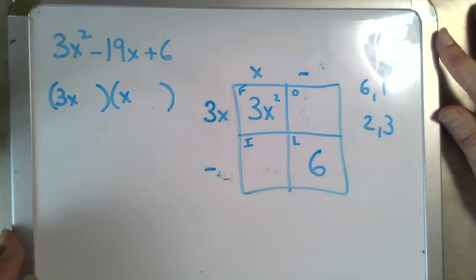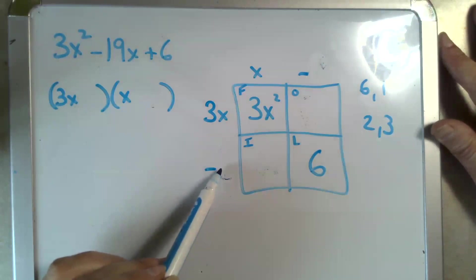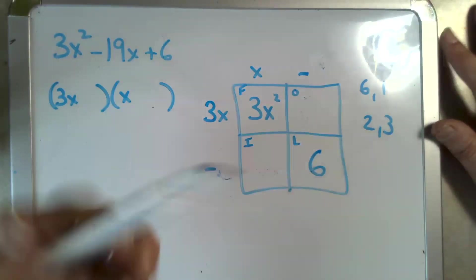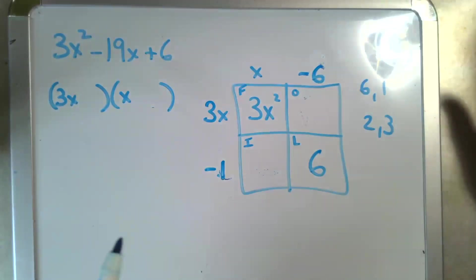This time, let's try 6 and 1. We can be strategic here. We need to come up with 19, so putting the 6 here and the 1 here probably won't work. We need to multiply the 6 times the 3, so let's jump straight to that. If we're wrong, we can do it again.